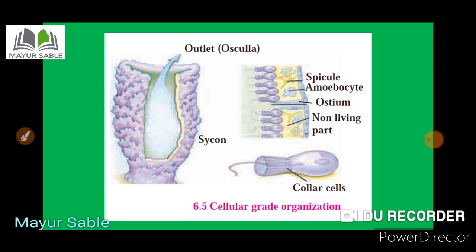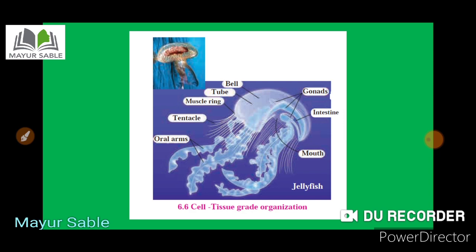In some animals the cells come together to form tissues, through which all body functions are performed. Such animals show cell-tissue grade organization. Examples include animals from phylum Cnidaria. The jellyfish has tissues but organs are not formed, so it is called cell-tissue grade organization.